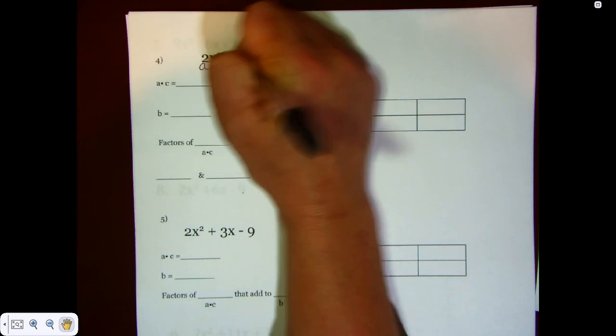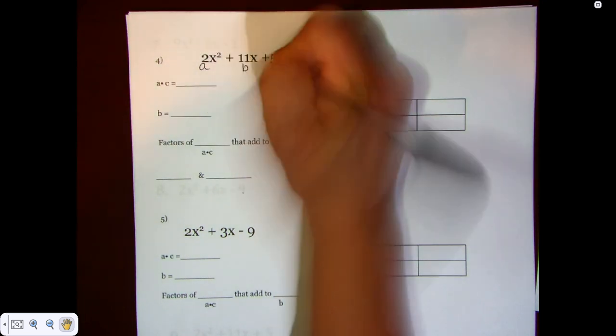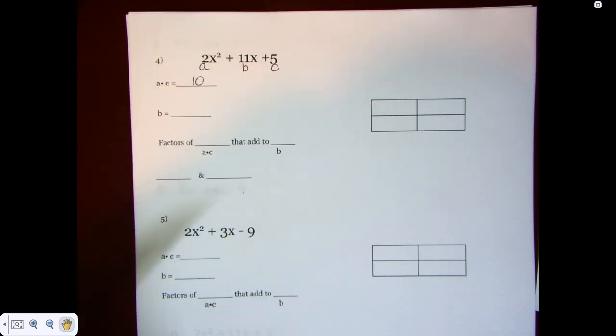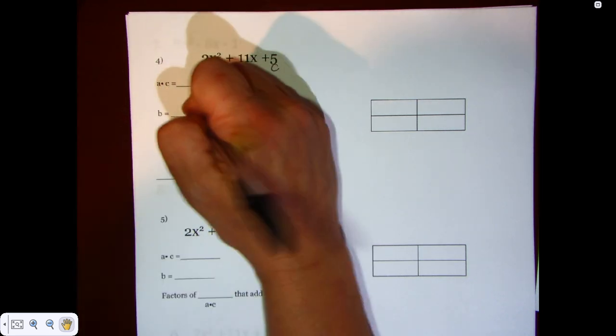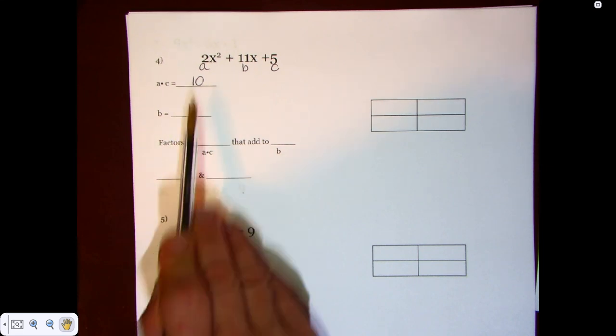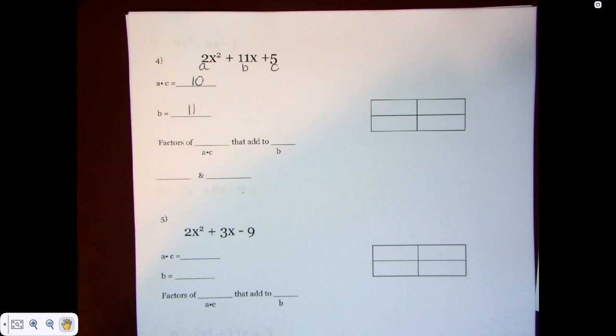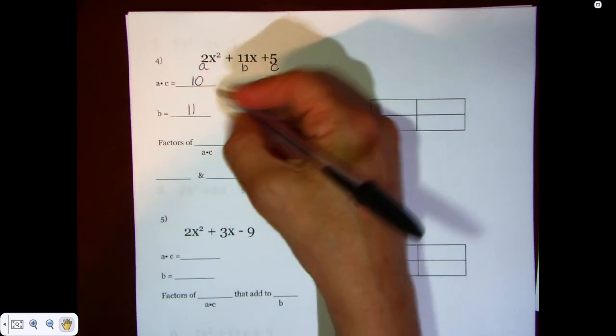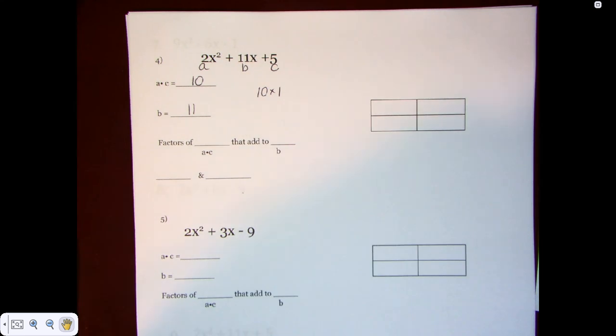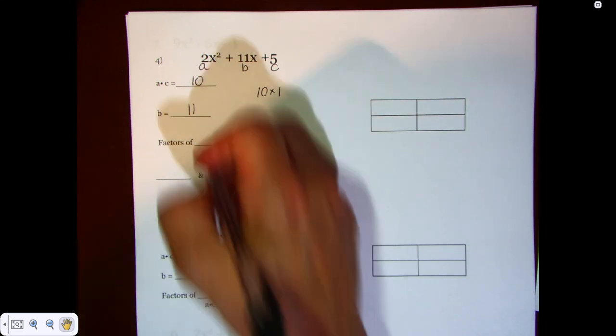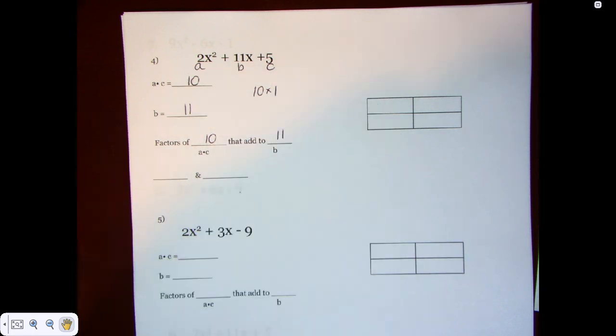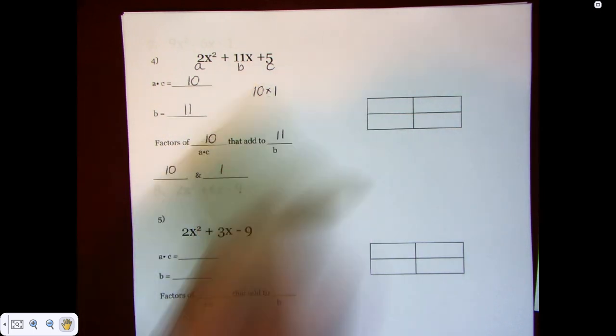First of all, I have A, B, and C. We want to know A times C is equal to 10, and B is equal to 11. So we want the factors of 10 that add to 11. Since everything's positive, I know my factors are going to be positive. And I could also tell by looking at it, 10 times 1 when added up is equal to 11. So factors of 10 that add to 11 happen to be 10 and 1.